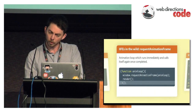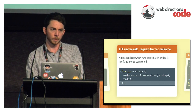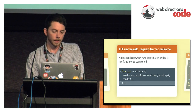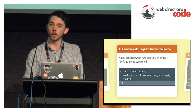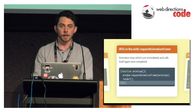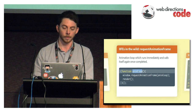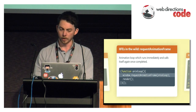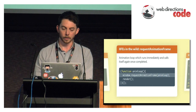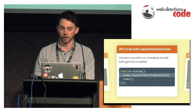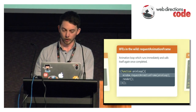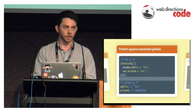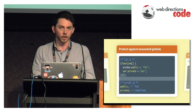Another interesting case is requestAnimationFrame. A lot of people tend to put it in an IIFE like this. In this case it's not an anonymous function — we have a named function expression called animloop. It can reference itself inside the function when passing it to the requestAnimationFrame API before calling your render function. So there are a few different uses for IIFEs and I'm going to cover them.